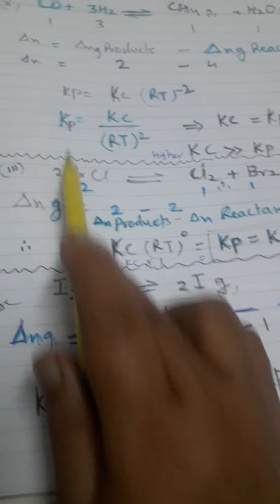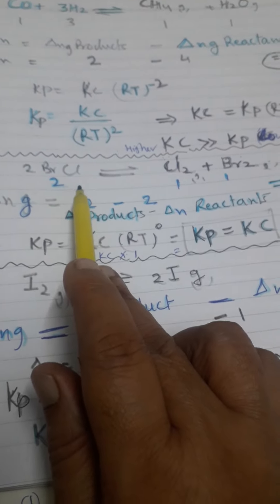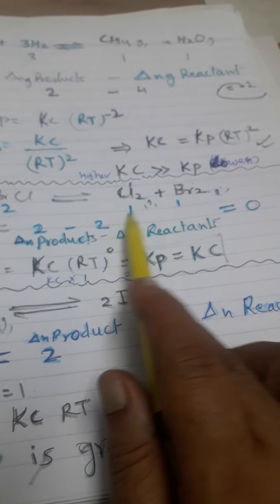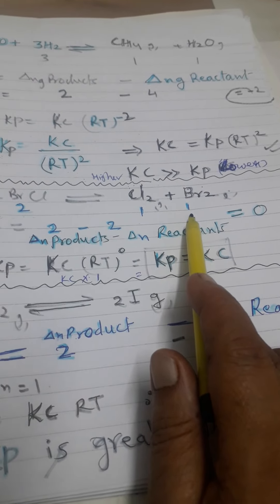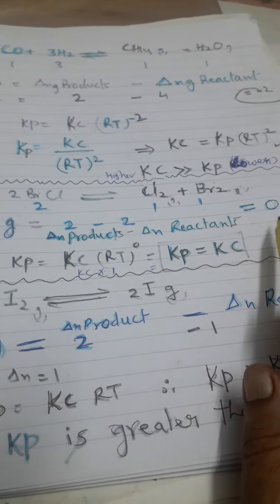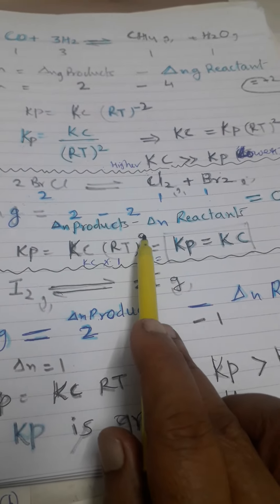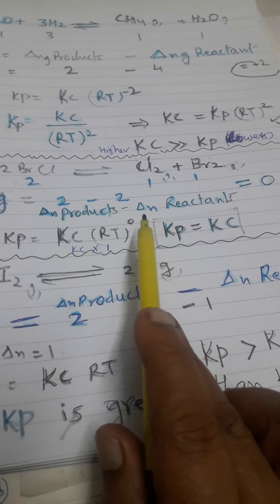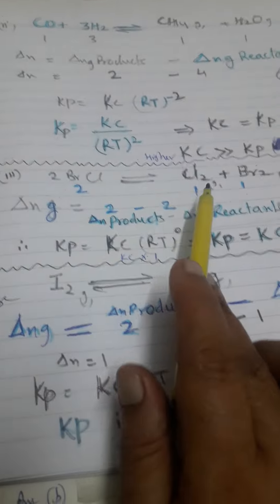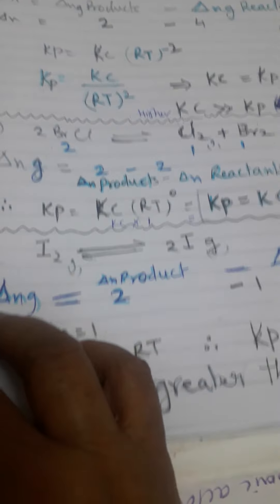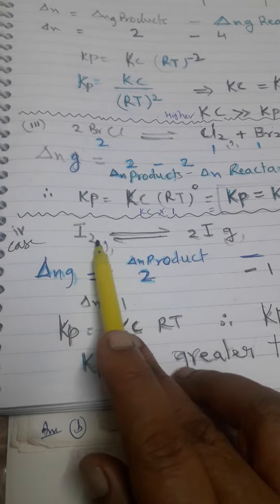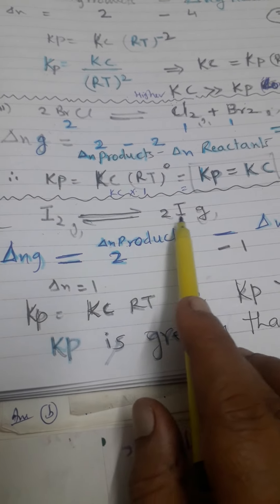In the BrCl case, we take 2 moles of reactant and there are 1 + 1 = 2 moles of product, so reactants equal products and ΔN = 0. At that moment Kp = Kc(RT)^0 = Kc × 1, so Kp equals Kc. When the number of moles of reactant equals the number of moles of product, Kp equals Kc.